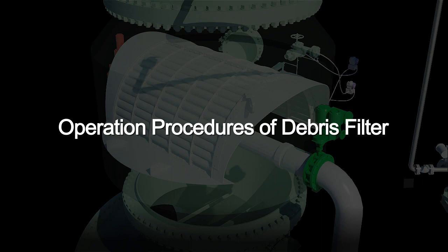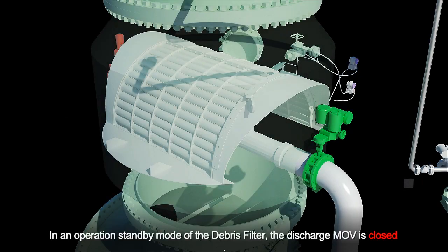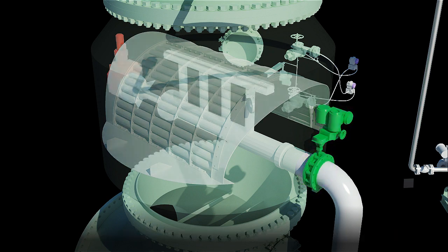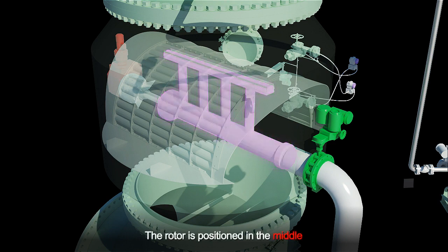Operation Procedures of Debris Filter. In an operation standby mode of the debris filter, the discharge MOV is closed. The rotor is positioned in the middle.